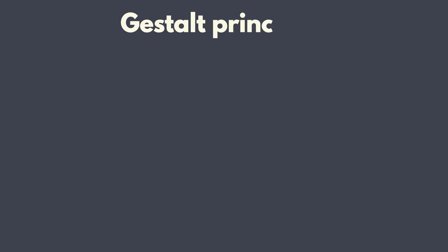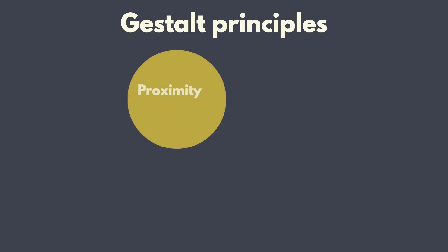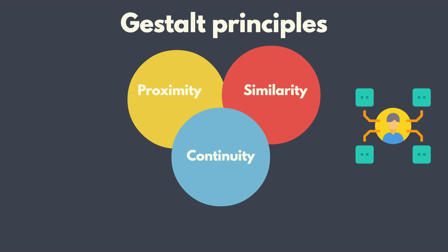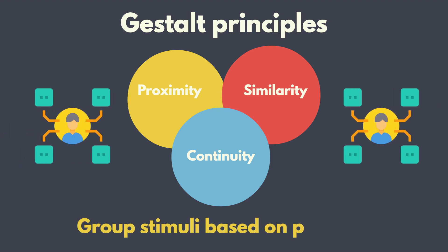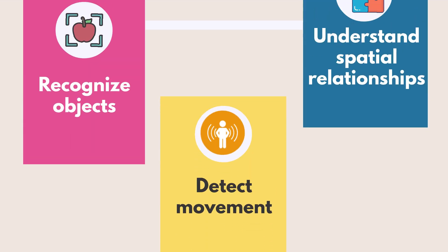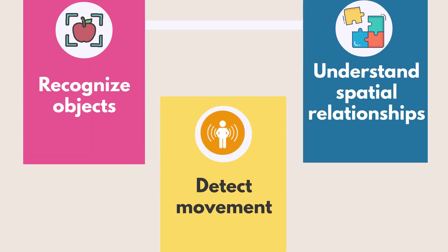Gestalt principles, such as proximity, similarity, and continuity, highlight how we tend to group stimuli based on patterns. This helps us recognize objects, detect movement, and understand spatial relationships.